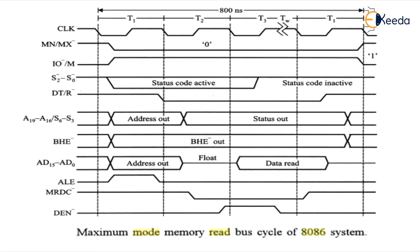Now for the memory read bus cycle timing diagram — please pay attention, this is very important. The first signal is the clock: there are four clock pulses T1, T2, T3, and T4. Next, which mode are we operating in? Maximum mode.